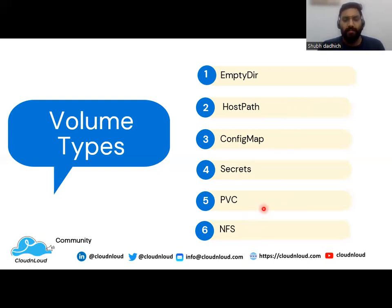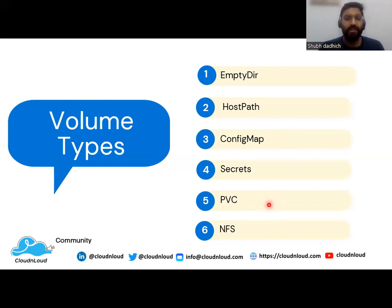Next we have PVC. A Persistent Volume Claim volume is used to request a specific amount of storage from a persistent volume. A PVC is used to abstract the underlying storage system, allowing administrators to provision storage without knowing the details of the storage system.